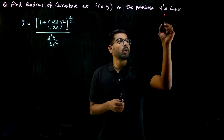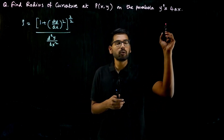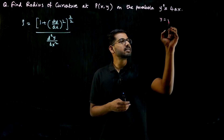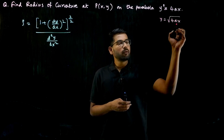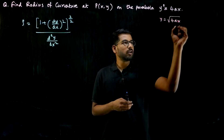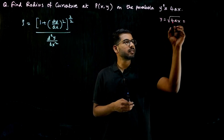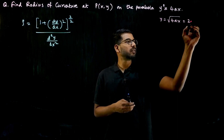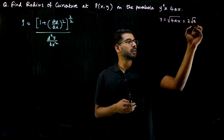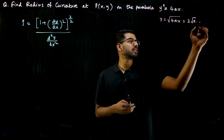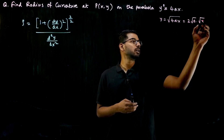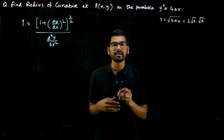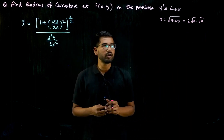So what is given? y² = 4ax, or y = √(4ax). √(4ax) can be written as 2·√a·√x. Why did I write it like this? Because it's easier to differentiate.